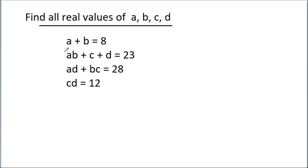In this video, we have given that a plus b is equal to 8, ab plus c plus d is equal to 23, ad plus bc is equal to 28, and cd is equal to 12. Then we have to find all the real values of a, b, c, and d.